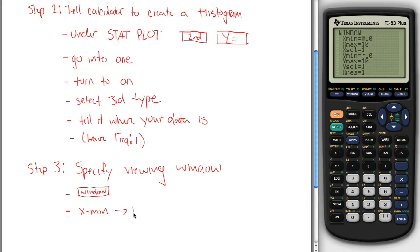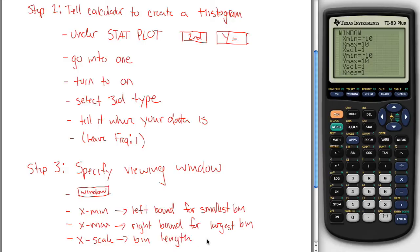X min is your left bound for smallest bin. Your X max is your right bound for largest bin. And then your X scale is the bin length.